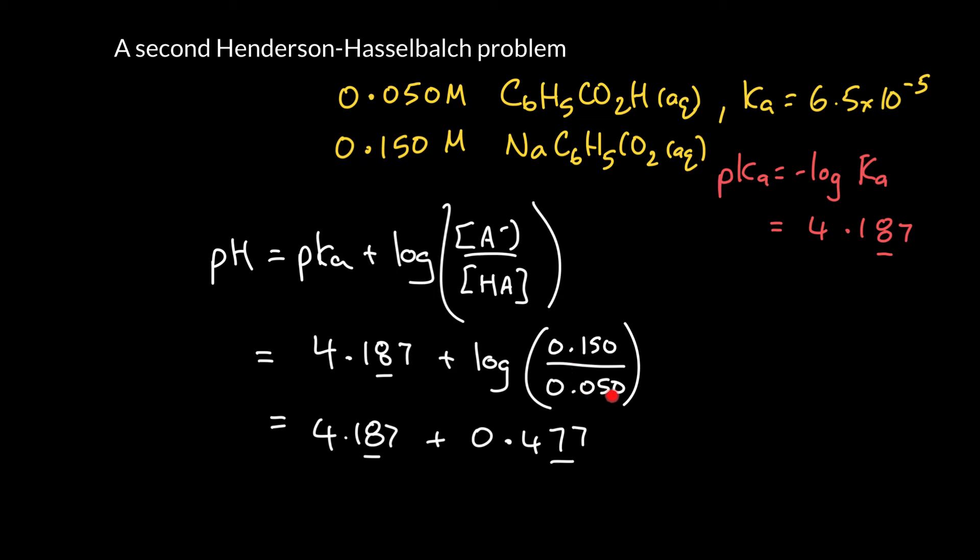Again, this has two significant figures, so when I log it I should only have two decimal places. And at the end of the problem I can add them together and round. So when I round at the end of the problem to two decimal places, I get a pH of 4.66.